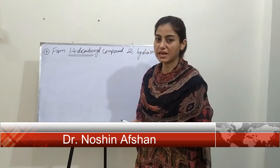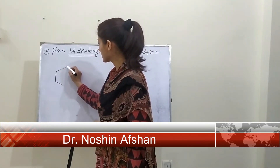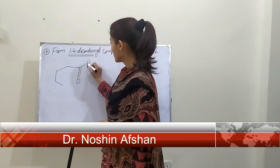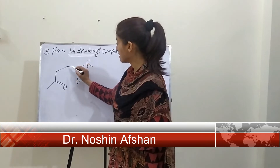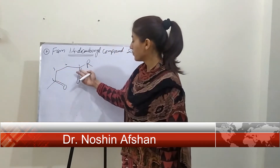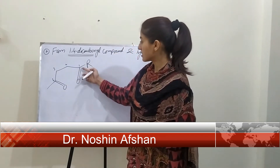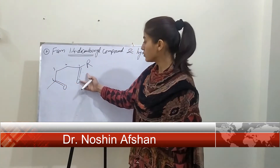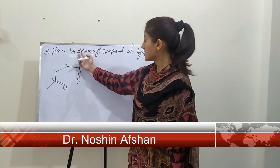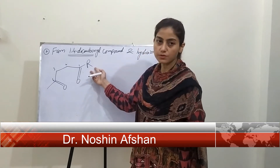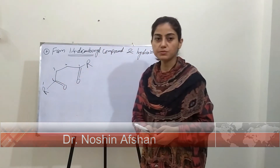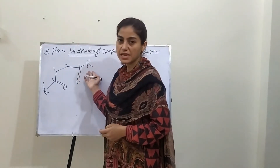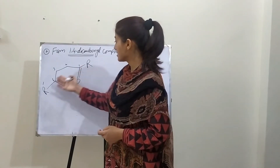First we will look at the general reaction and then study its mechanism. As the name indicates, the 1,4-dicarbonyl compound has two carbonyl groups attached at carbon number one and carbon number four — one carbonyl on each carbon. There are also two alkyl groups attached, one labeled R and the other R prime. These alkyl groups may be either identical or different; they may also be written as R1 and R2.